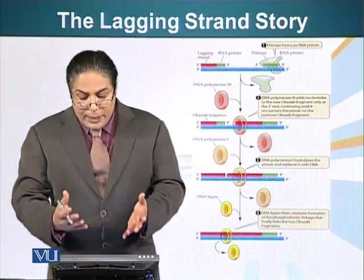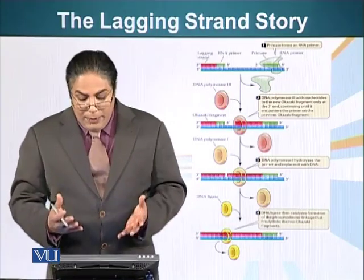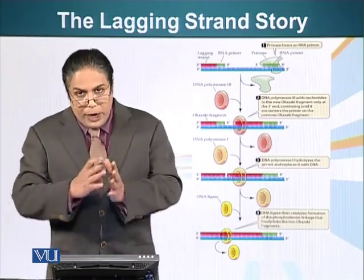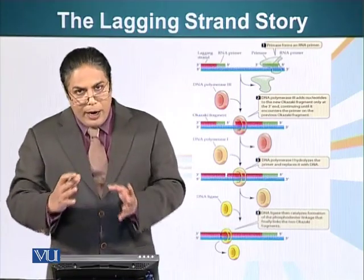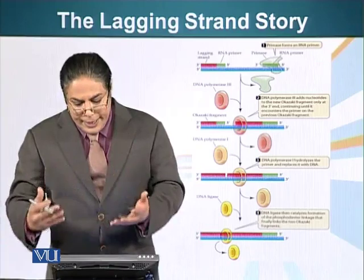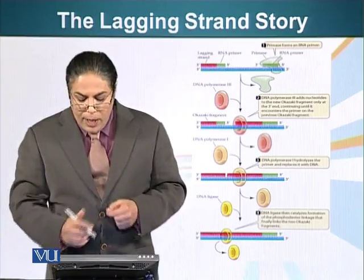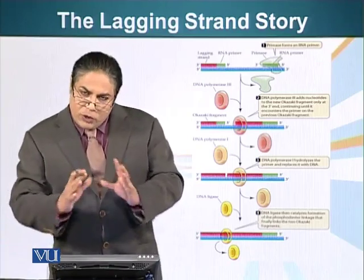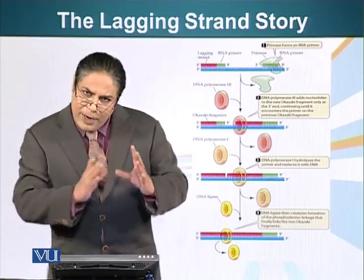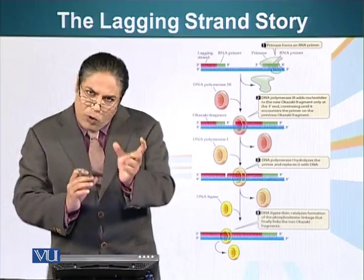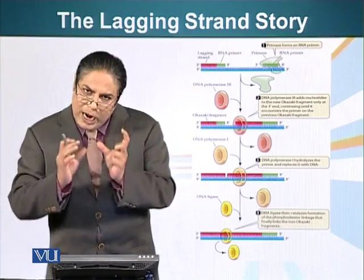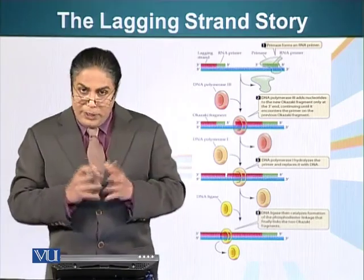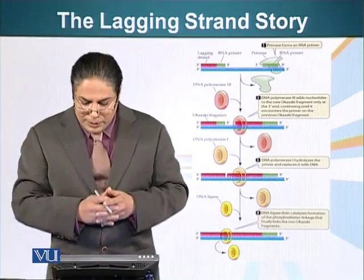However, there are other issues regarding making the lagging strand. Primarily, it is the RNA primer — we need to get rid of the RNA in the DNA molecule. So the lagging strand is sort of a hybrid between smaller pieces of DNA and smaller pieces of RNA, which are the primers.